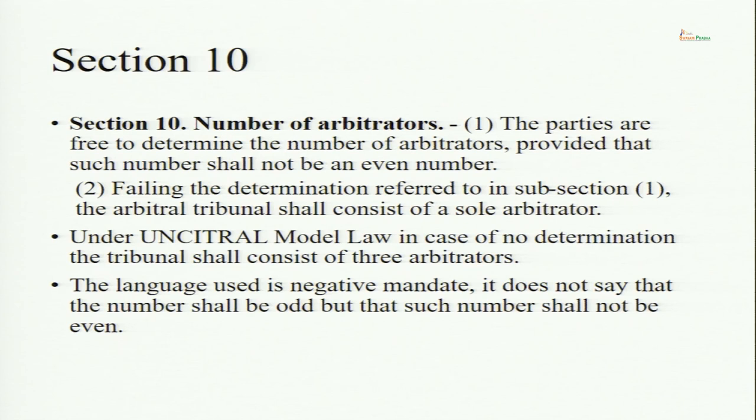Subsection 2 says: failing the determination in subsection 1 — if parties fail to determine the number of arbitrators — the default mechanism is that the arbitral tribunal shall consist of a sole arbitrator. On this point there is a difference between Indian law and the UNCITRAL Model Law, because in the Model Law, if no determination is made, the tribunal shall consist of three arbitrators. In Indian law, it is a sole arbitrator, because India does not want to make arbitration a costly affair for the parties.